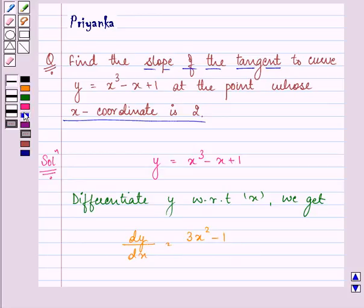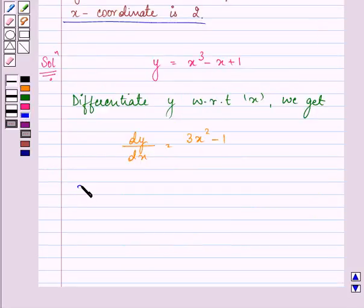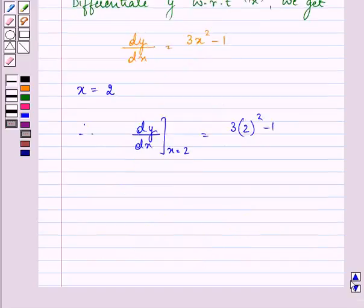And we need to find the slope when x-coordinate is 2. So we have dy/dx at x equals 2 equal to 3 times 2 squared minus 1, which is equal to 3 into 4 minus 1.